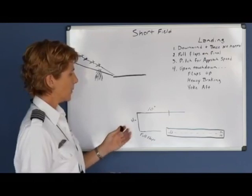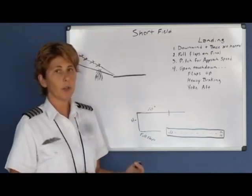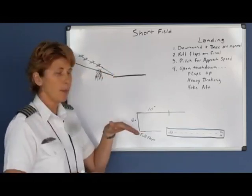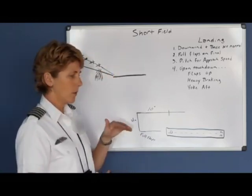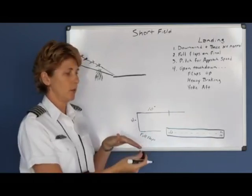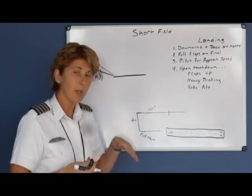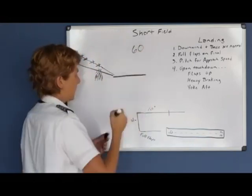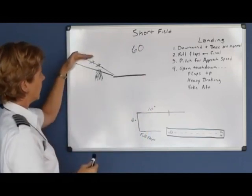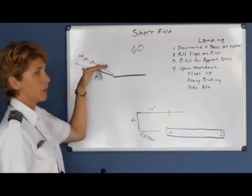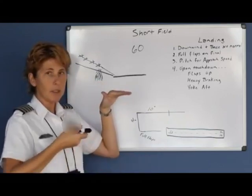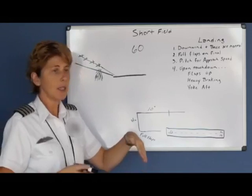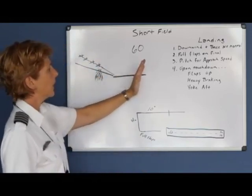If the obstacle or trees are very close to the runway, you're going to have to keep your higher glide path until the very end. Once you're clear of the trees, reduce the throttle to idle and pitch down to keep your speed. For example, if your approach speed was 60 and you're holding 60 with power, once you've cleared the trees you reduce throttle, pitch the aircraft down to maintain 60, and then go into your roundout and flare.